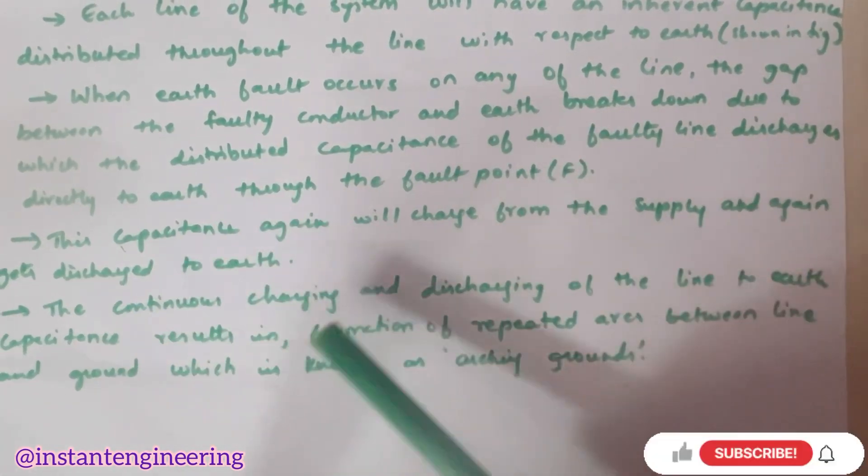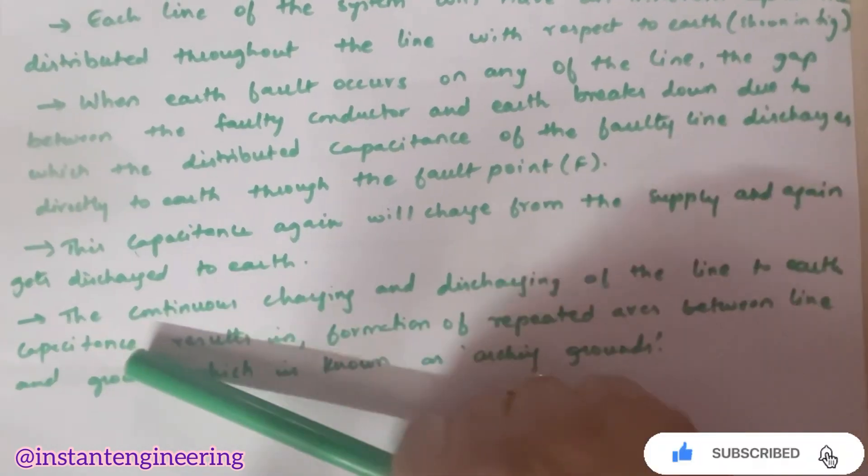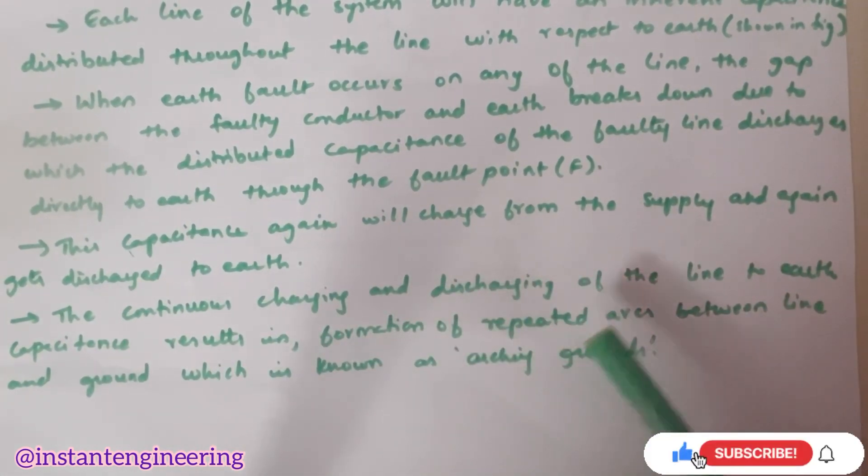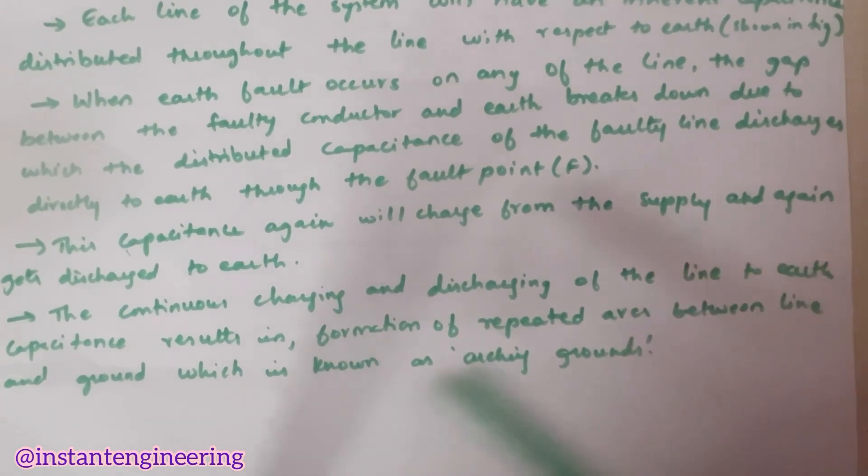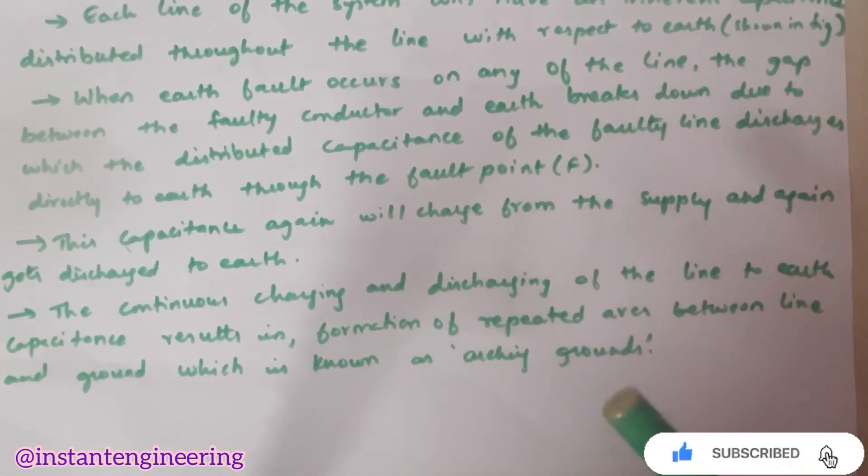So, it will charge from the supply again and gets discharged to the earth. So, this continuous charging and discharging of the line to earth capacitance results in formation of repeated arcs between line and ground, which is known as arcing grounds.